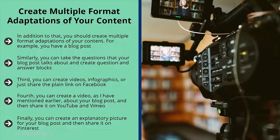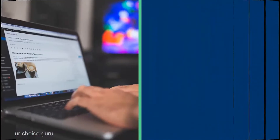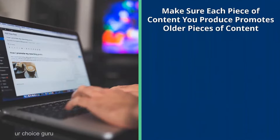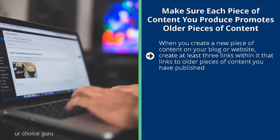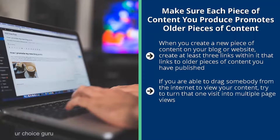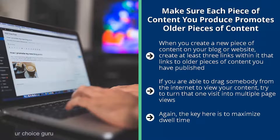Finally, create an explanatory picture for your blog post and share it on Pinterest, linking back to the blog post. By creating multiple format adaptations and heavily promoting them on your social media accounts, you drive niche-targeted traffic from all over the internet to your website. Make sure each piece of content you produce promotes older pieces by creating at least three internal links to older published content. Try to turn every single visit into multiple page views to maximize dwell time and increase the chances of conversion.